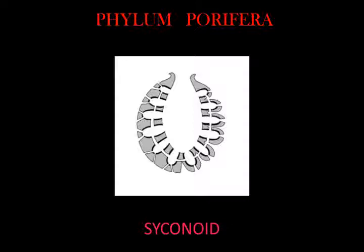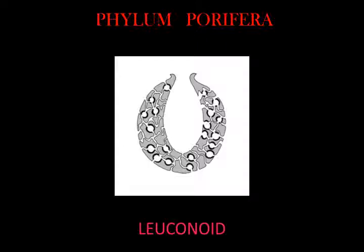The leuconoid pattern boosts pumping capacity further by filling the interior almost completely with mesohyl containing a network of chambers lined with choanocytes, connected to each other and to water intakes and outlets by tubes. Leuconoid sponges grow to over one meter in diameter, and growth in any direction increases the number of choanocyte chambers, enabling a wider range of forms such as encrusting sponges. All fresh water and most shallow water marine sponges have leuconoid bodies.